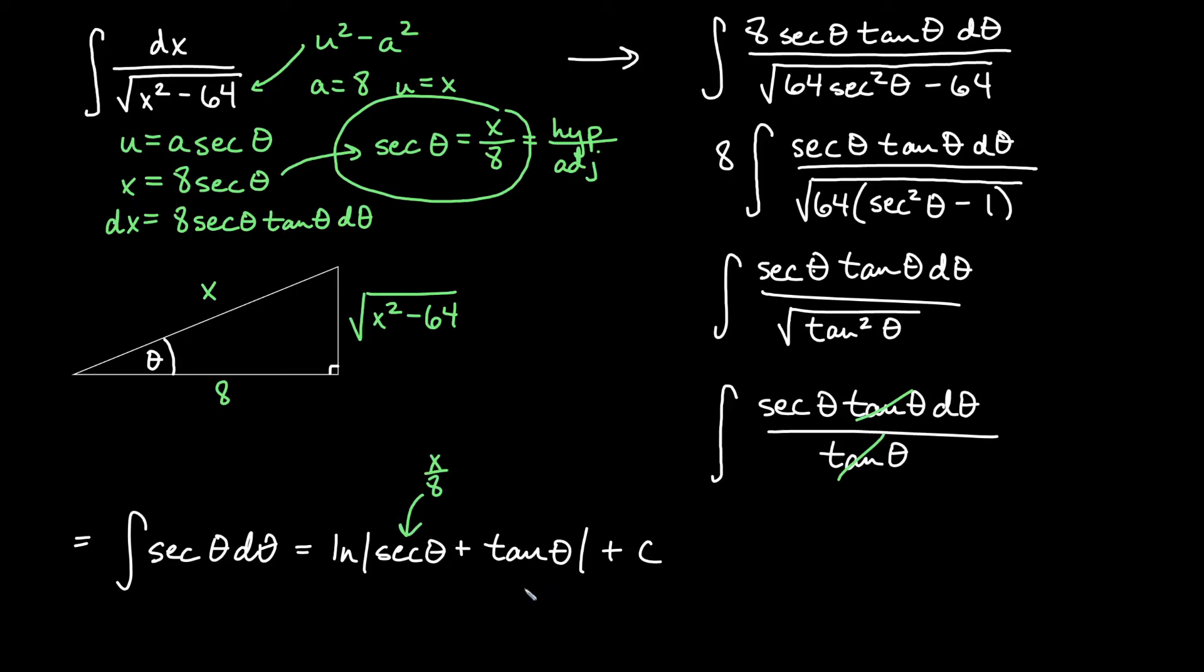And then tangent of theta, that's going to be the opposite over the adjacent. So this one here is going to be the root over the 8. So that will be the square root of x squared minus 64 over 8. Since they're both over 8, I'm going to go ahead and write it all as one fraction when I write this for our final answer. So we'll say ln of x plus the square root of x squared minus 64 all over 8 plus c.